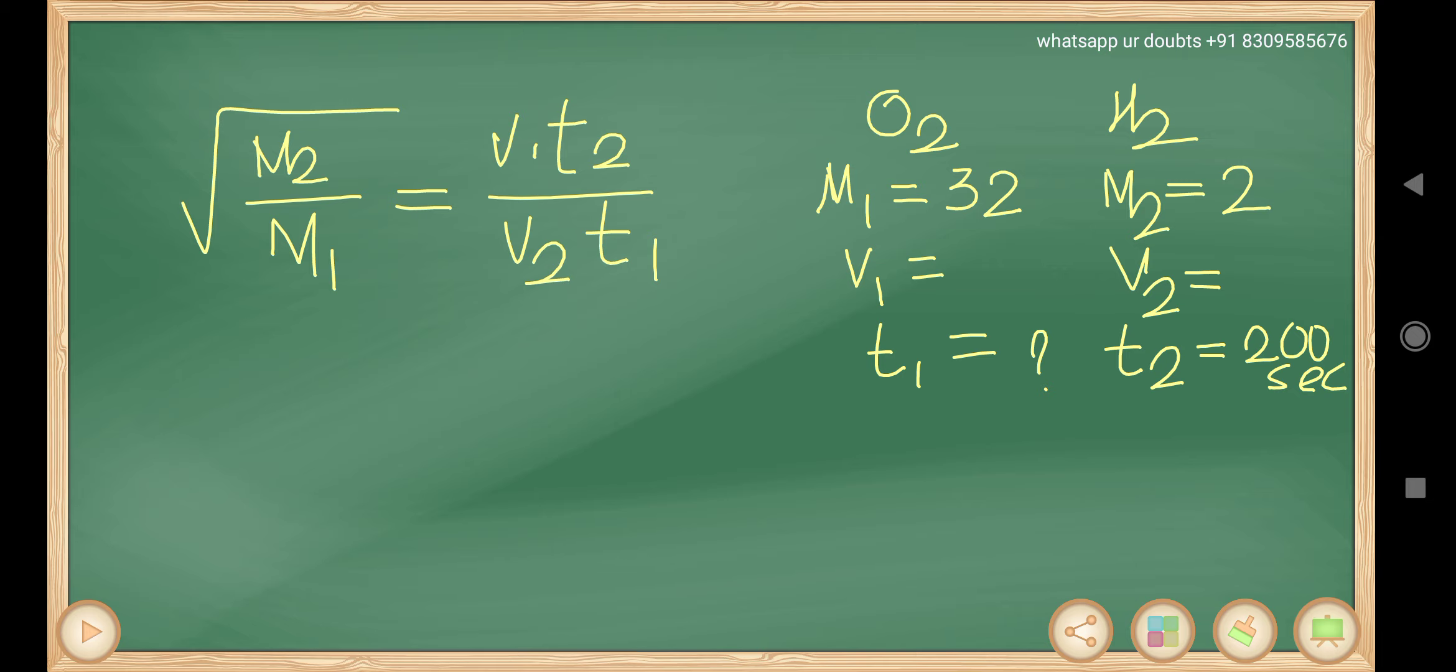Volume is not mentioned, but we can comfortably say volume is nothing but number of moles. Because according to Avogadro's law, under similar conditions of pressure and temperature, equal volumes of all gases contain equal number of moles. V is proportional to N. So number of moles you can take as volume.